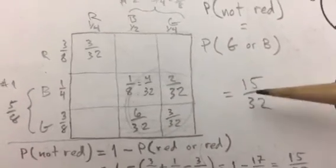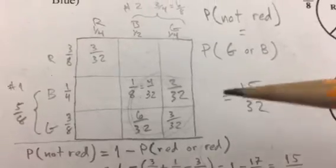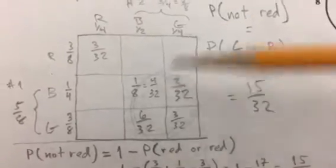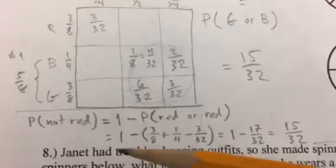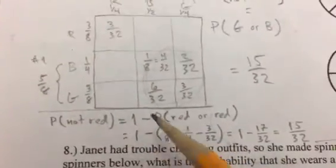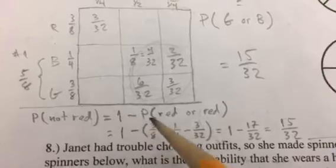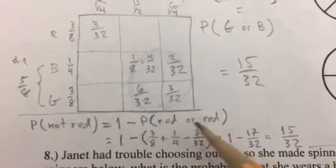You can multiply these fractions together and get your probabilities for each one and add them up, and you get 15 over 32. You could do this in a slightly more complicated way, just to show you the benefit of using the area model here. You can think of probability of getting not red as the same thing as one minus the probability of red or red.